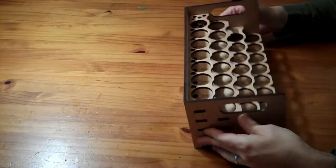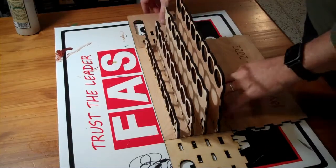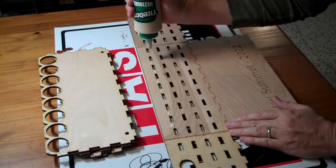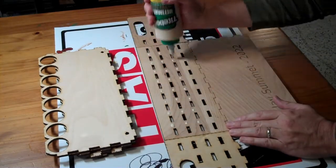I recommend tight bond wood glue, although you don't really need the waterproof version for this application. Be sure to assemble on top of waxed paper or a piece of plastic so you don't glue your rack to the table.